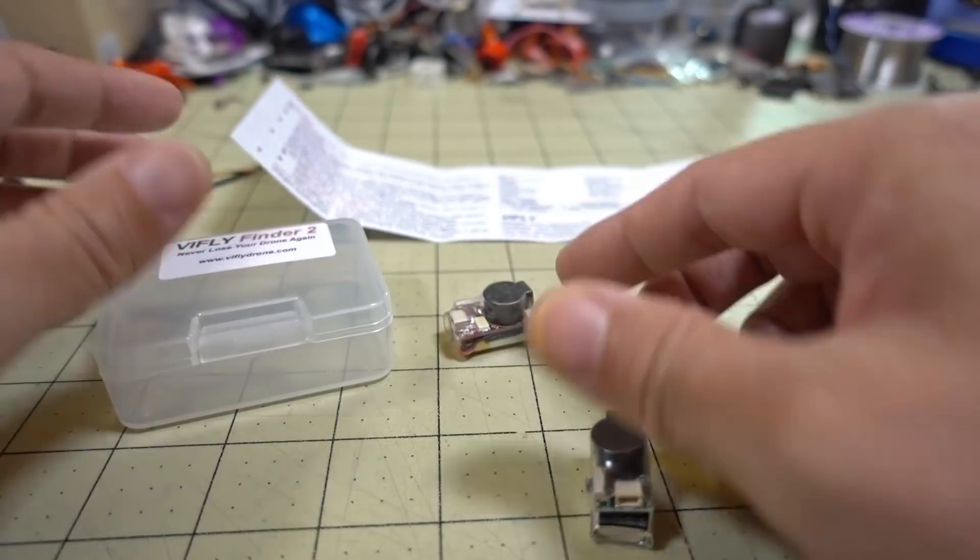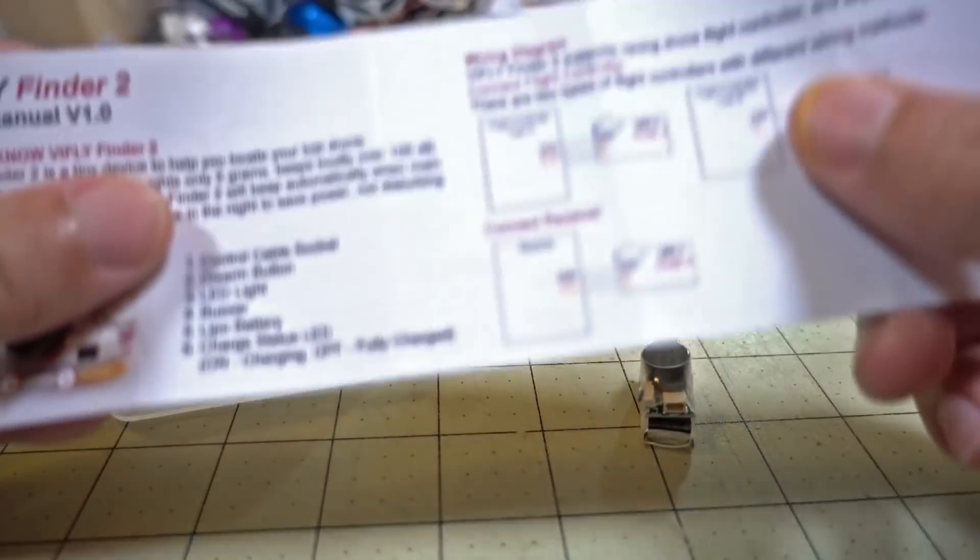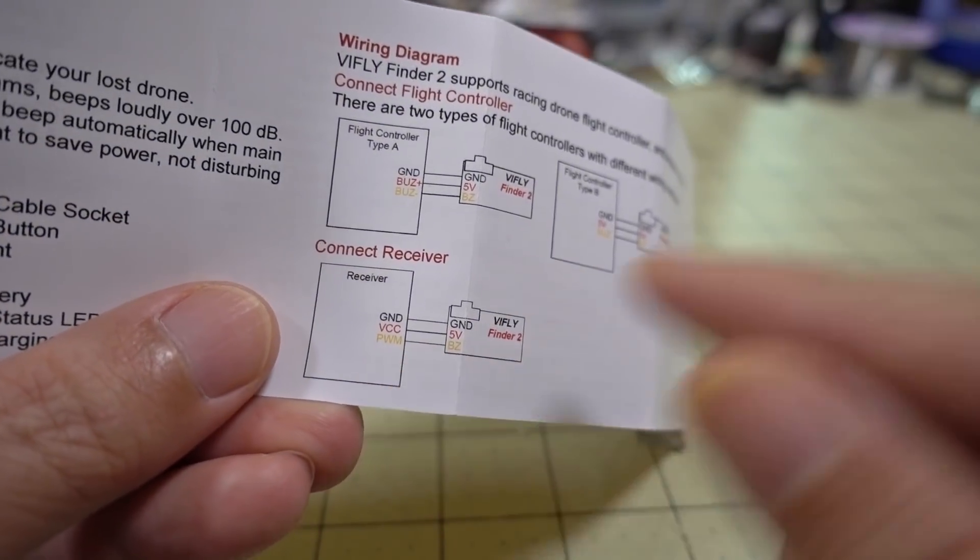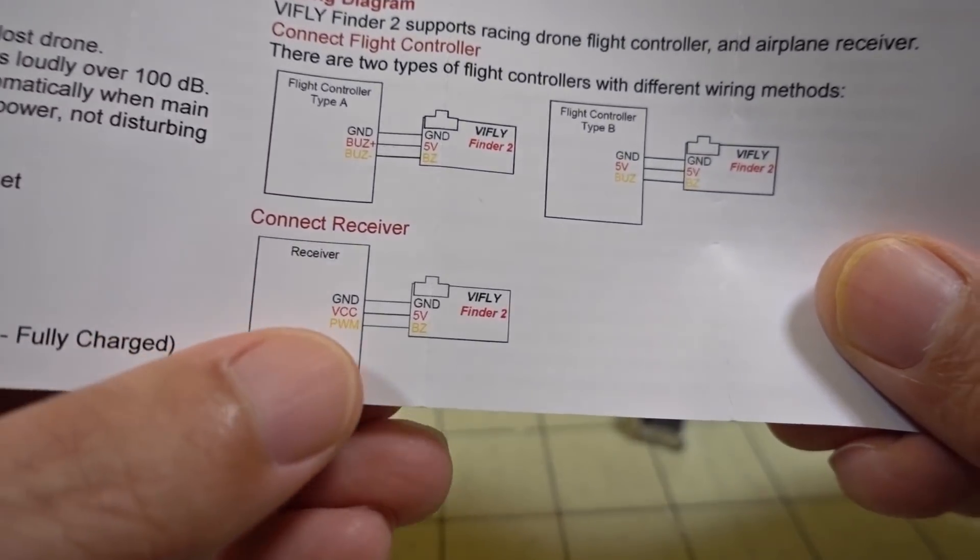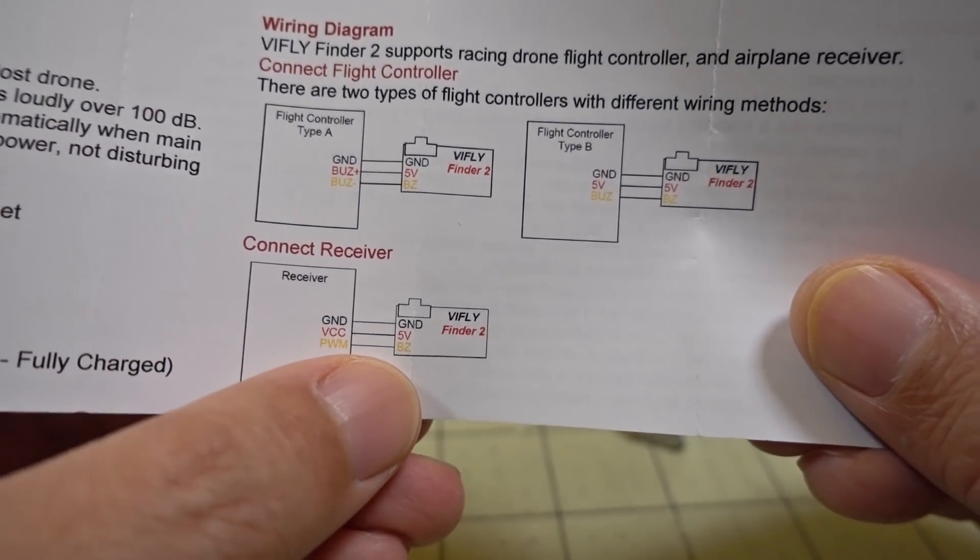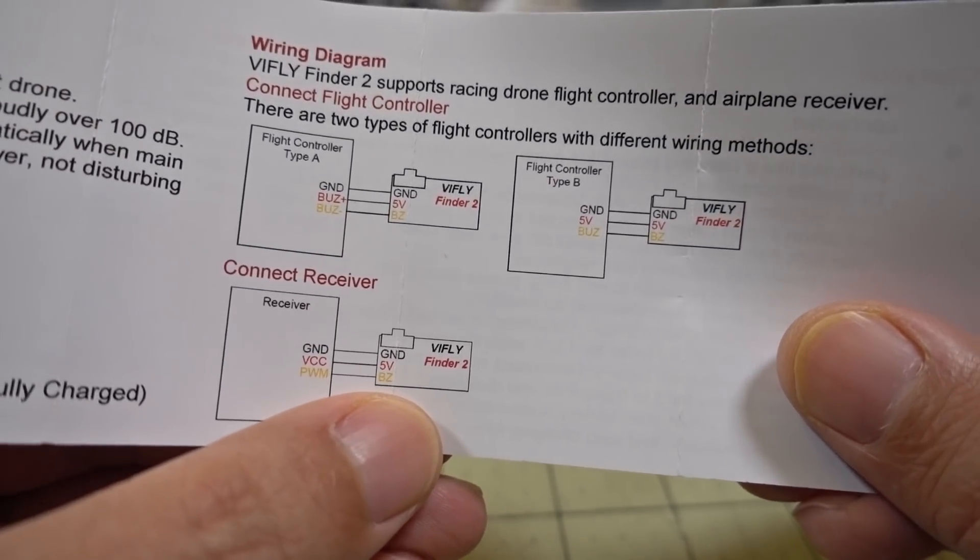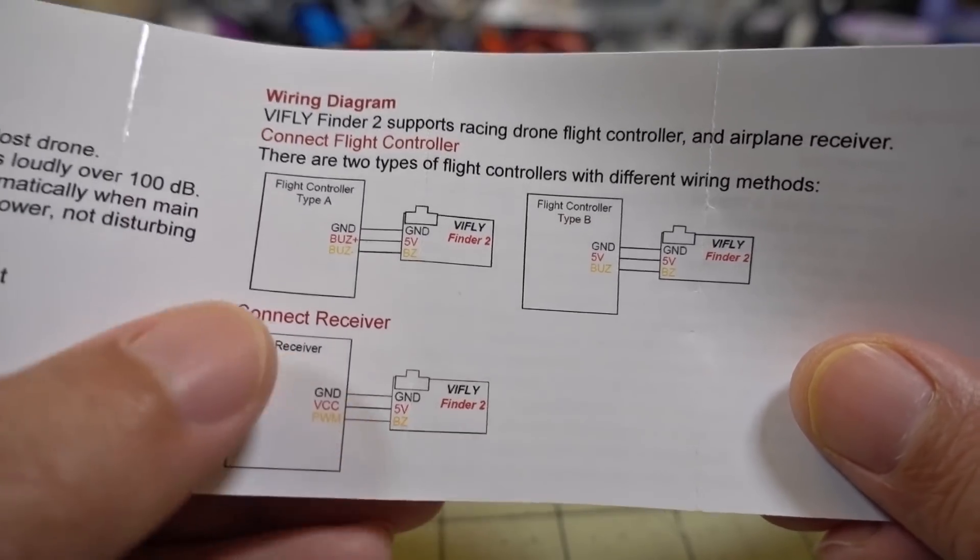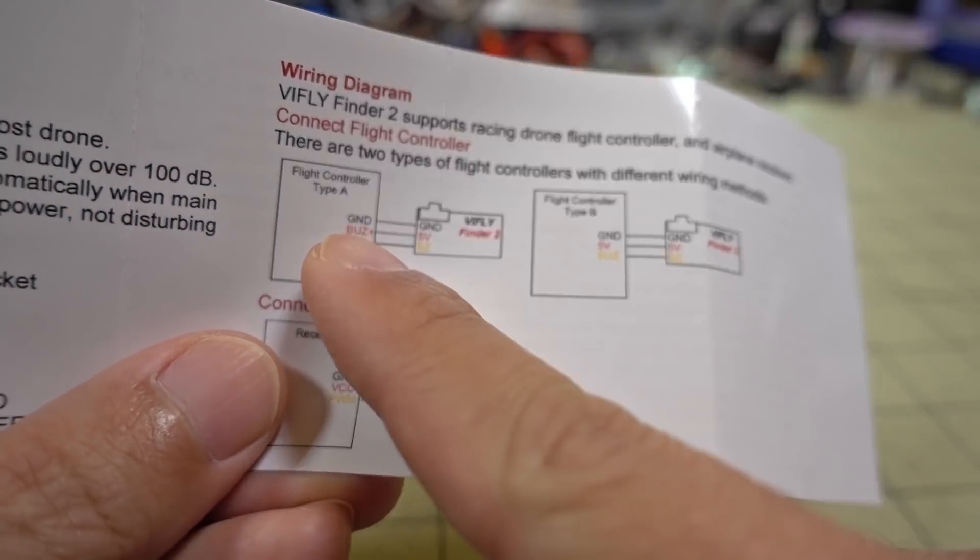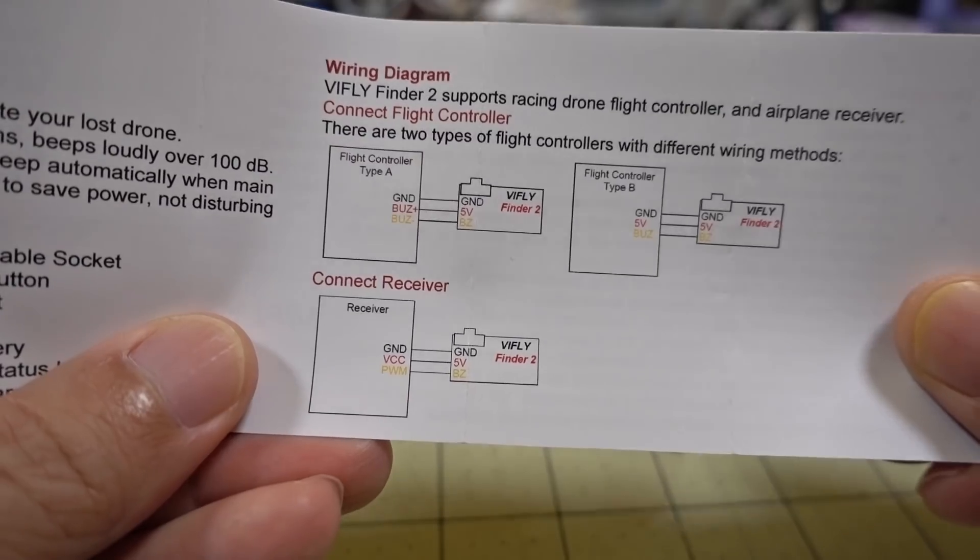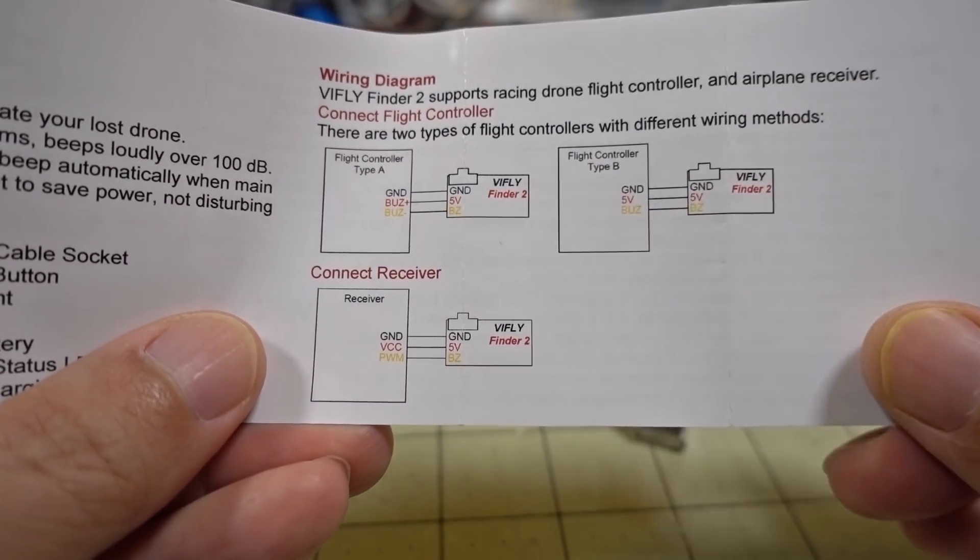And then lastly, I think the biggest difference here between version 1 and version 2 is the ability to connect it to a receiver and use a PWM signal to trigger the alarm. Whereas before you could just connect it to a flight controller, now you can connect it directly to a receiver. I'll demonstrate that.